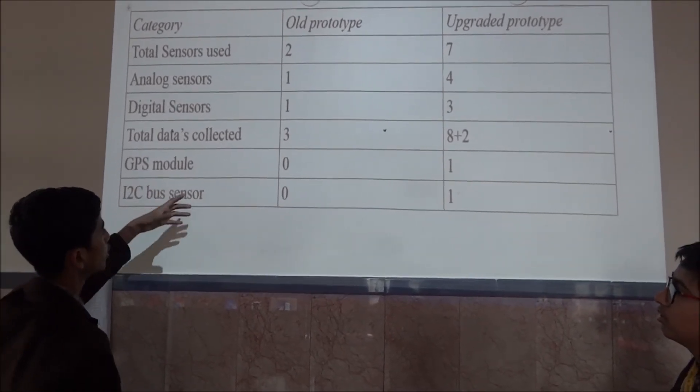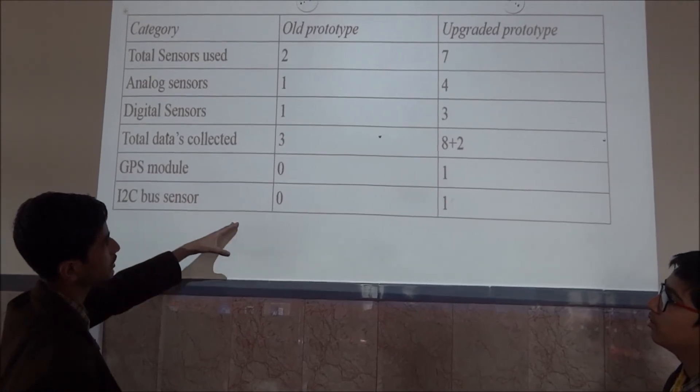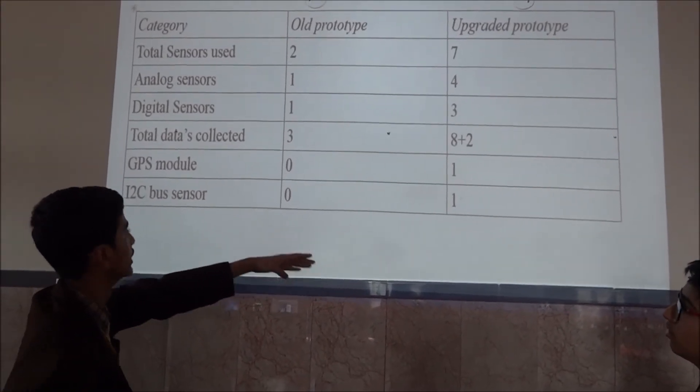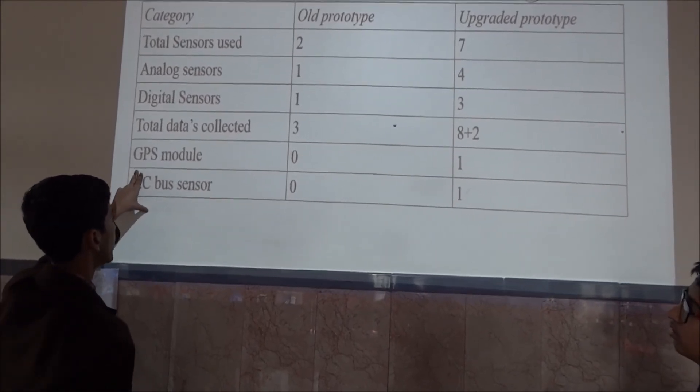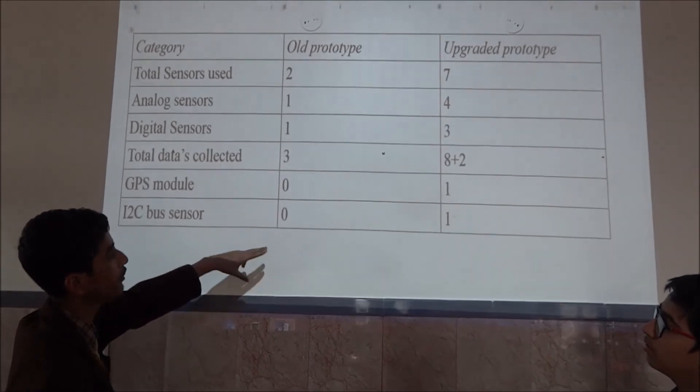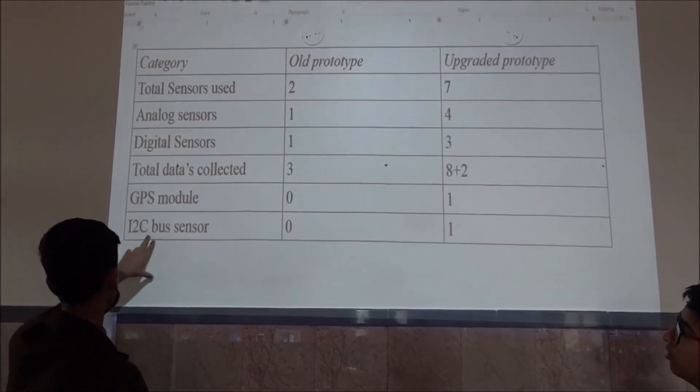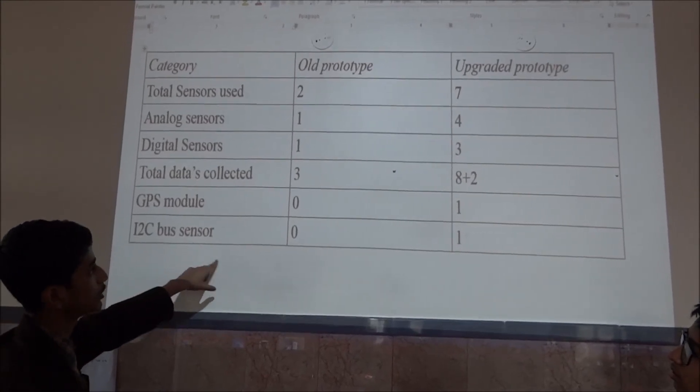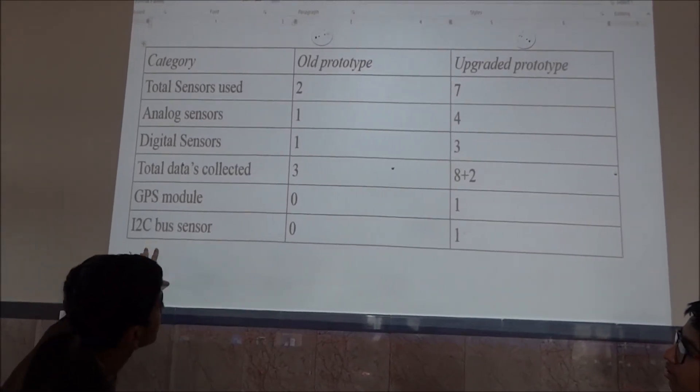Total data is correct. In our old prototype, we were getting just three readings. But in our upgraded prototype, we are getting eight plus two that is ten readings. We haven't attached any GPS modules in our old prototype. But we have GPS modules in our upgraded prototype. Now, the main innovation that is I2C bus sensor, we have also attached it in our upgraded prototype.